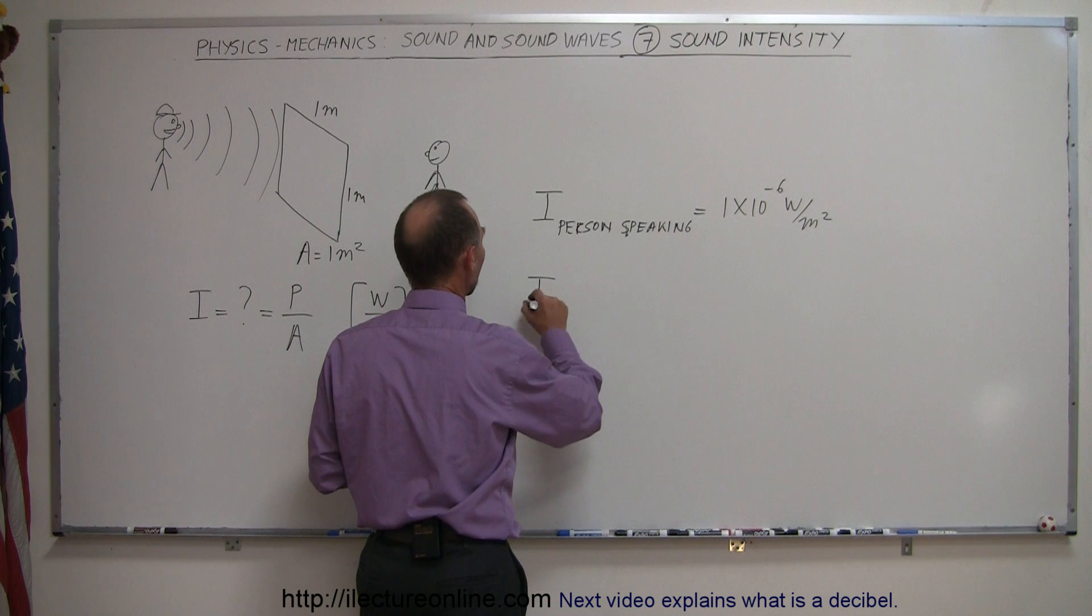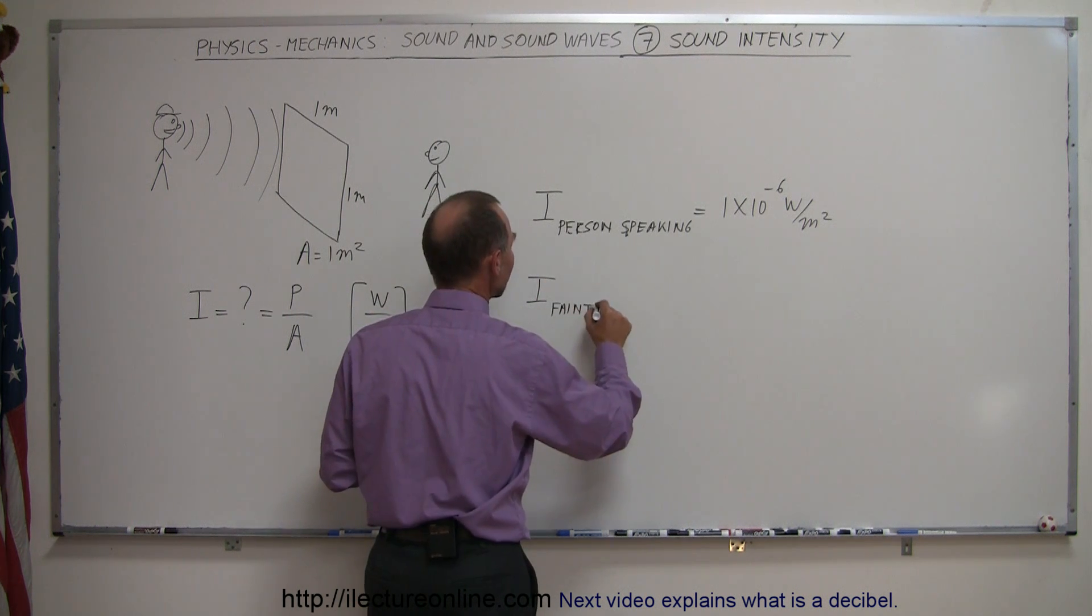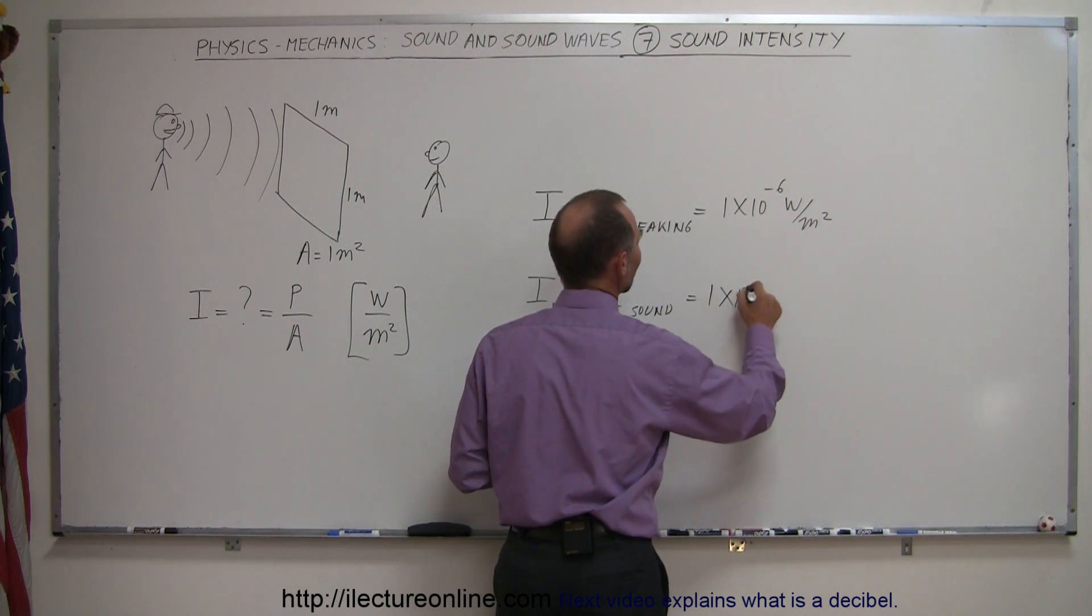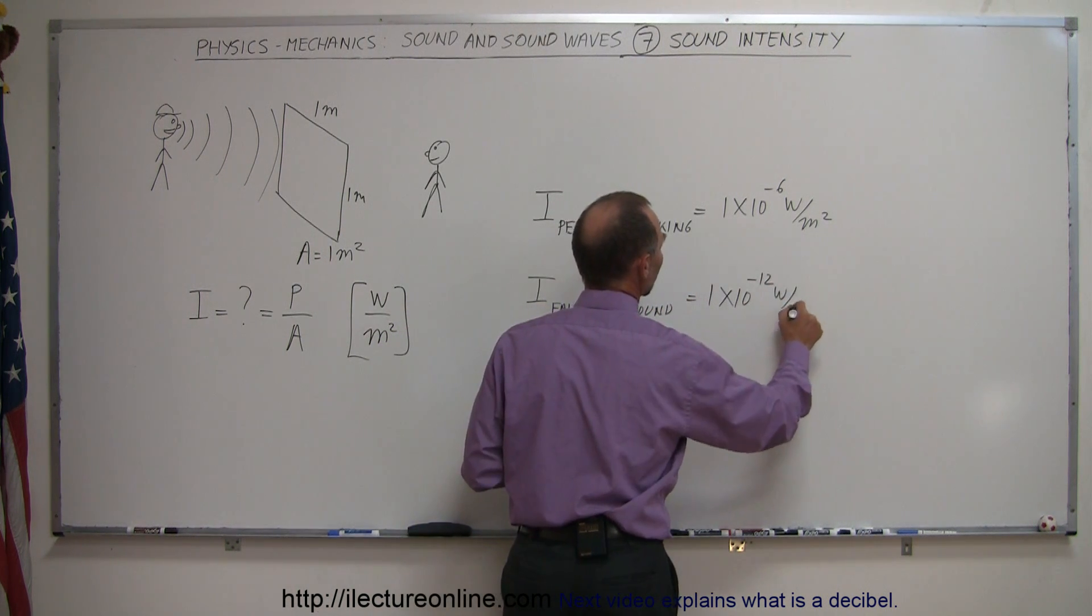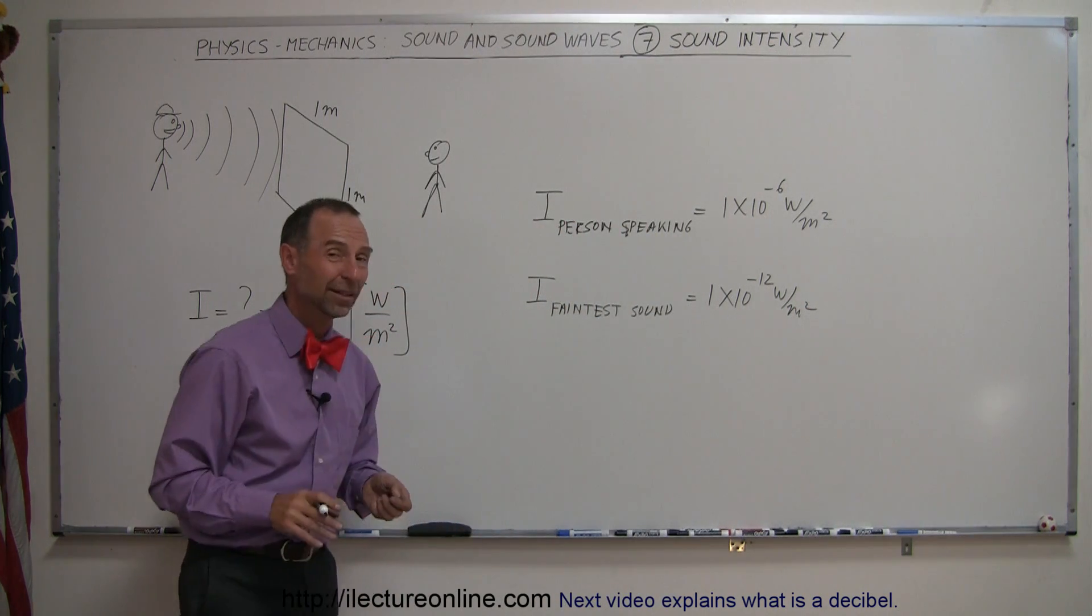And for example, the faintest sound that human hearing can hear is in the order of 1 times 10 to the minus 12 watts per square meter, which is one trillionth of a watt per square meter.